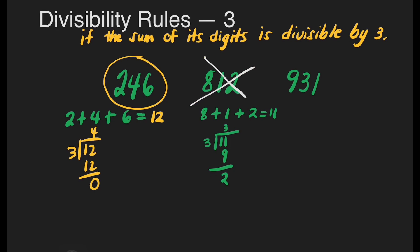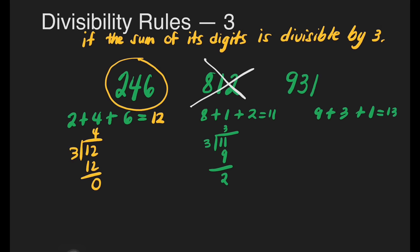How about 931? 9 plus 3 plus 1: 9 plus 3 is 12, plus 1 is 13. If we divide 13 by 3, that's 4 times 3 which is 12, and we have a remainder of 1. So 931 is not divisible by 3.